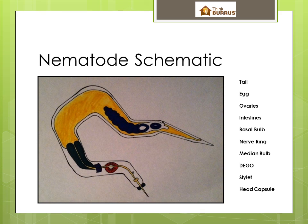So there you have it: tail, egg, ovaries, intestines, basal bulb, nerve ring, median bulb, DEGO, stylet, and head capsule. That's about as brief as we can make an introduction to nematodes and nematode anatomy. It should get you well positioned for our sessions on soybean cyst nematode and corn nematodes.